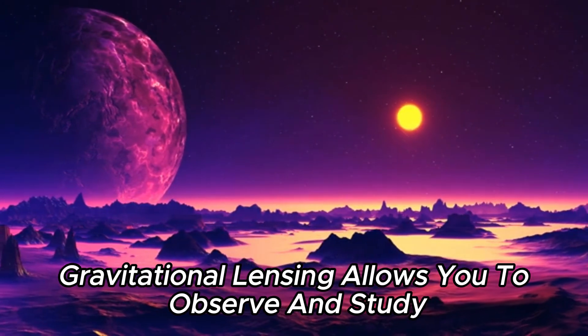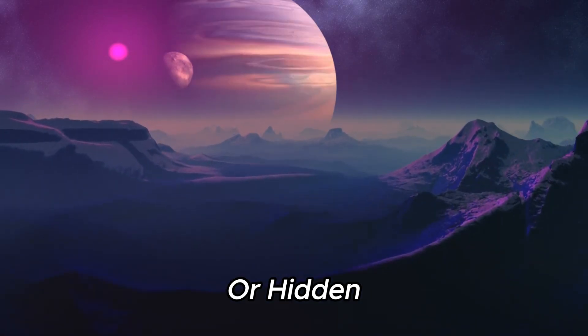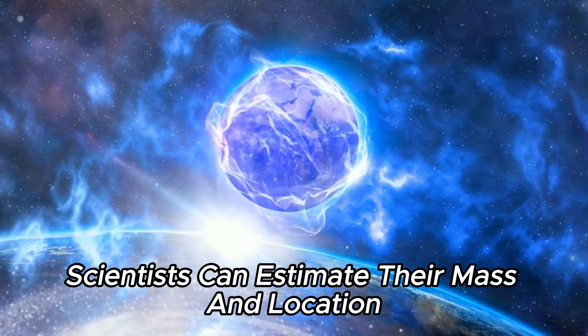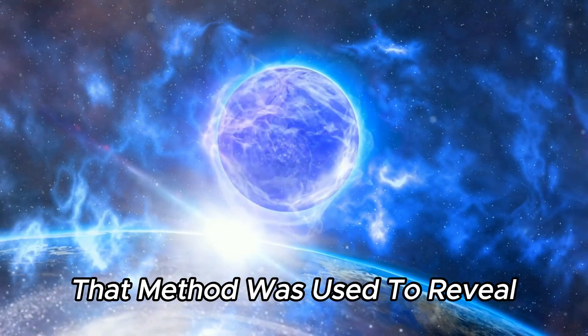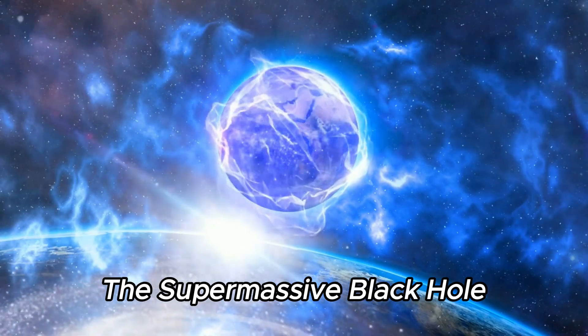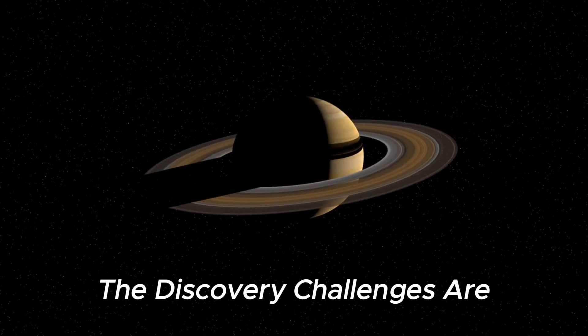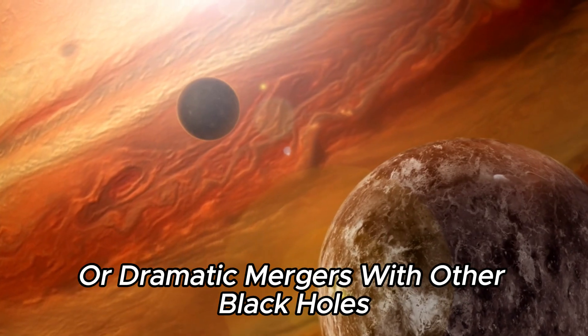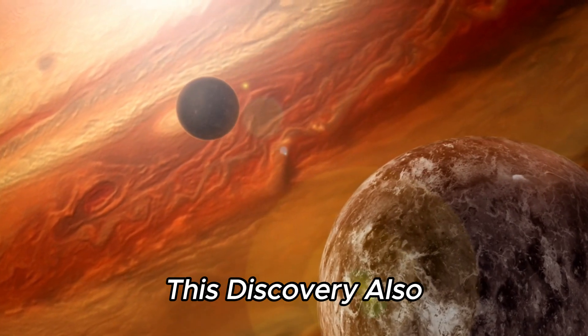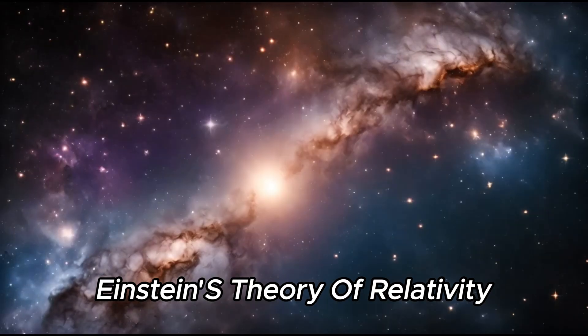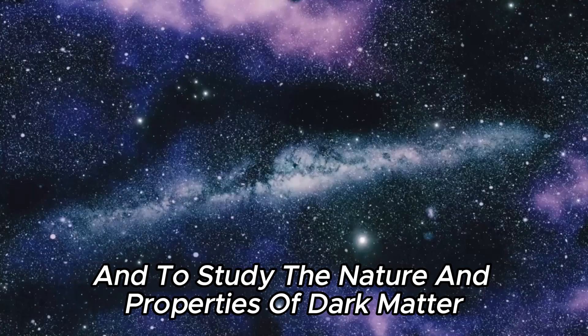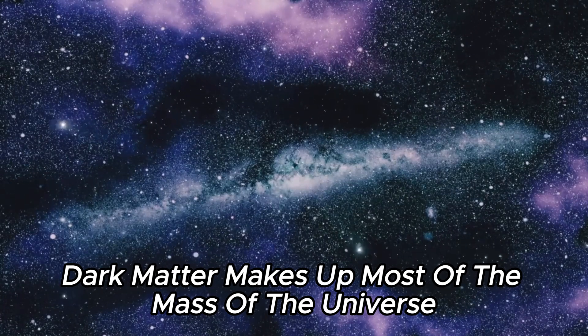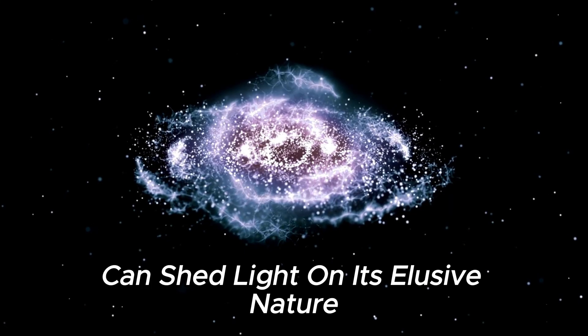Gravitational lensing allows you to observe and study objects that are otherwise too dim or hidden. By measuring the bending and broadening of light caused by massive objects, scientists can estimate their mass and location. That method was used to reveal the supermassive black hole Abel 1201. The discovery challenges our understanding of how black holes form and grow, suggesting that they can form through rapid accretion of matter or dramatic mergers with other black holes. This discovery also provides an opportunity to test Einstein's theory of relativity under extreme conditions, and to study the nature and properties of dark matter. Dark matter makes up most of the mass of the universe, and studying supermassive black holes can shed light on its elusive nature.